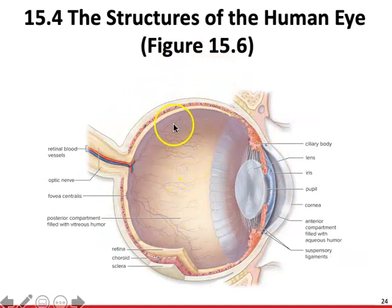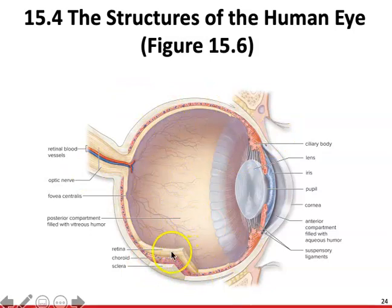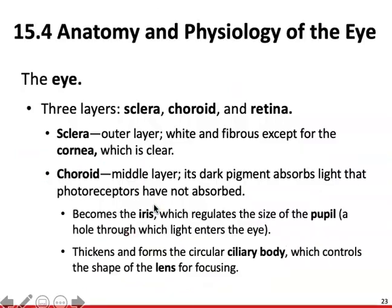The melanin in the vascular layer is going to prevent light from coming into your eye and just bouncing around like a ping pong ball. It's really going to dampen all of the light except for that which is going to reflect onto your retina, giving us sharper focus and absorbing that excess light. That's going to be our choroid. The next stop in from the choroid is going to be the ciliary body.